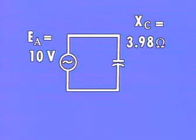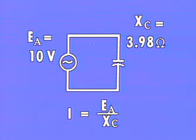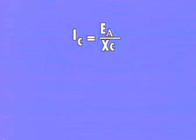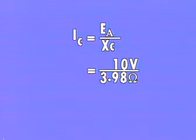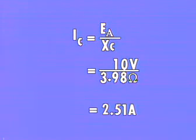If the applied voltage is 10 volts, the current in the circuit would be the value of the applied voltage divided by the value of the capacitive reactance. 10 volts divided by 3.98 ohms equals 2.51 amperes.